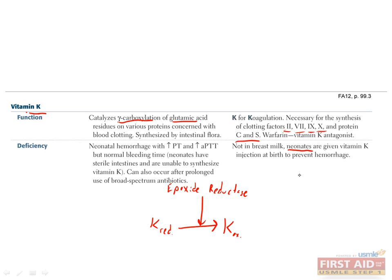A deficiency in vitamin K can occur in neonates who have sterile intestines or after antibiotic use, since the primary source of vitamin K is intestinal flora. People who are deficient in vitamin K can't produce enough clotting factors and are therefore at risk for hemorrhage. Labs will show increased PT and PTT, but a normal bleeding time, since platelets still function normally. To prevent this, neonates are given an intramuscular injection of vitamin K at birth.